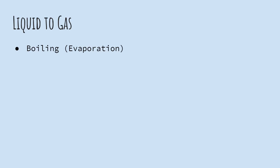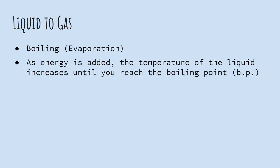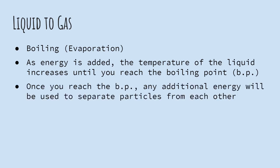Liquid to gas, that's called boiling or technically evaporation. As we add energy to a liquid, the temperature of liquid goes up until you reach the boiling point. That's the temperature where the things are going to start to boil. Once you reach the boiling point, any more energy that you add, instead of changing the temperature, it's used to separate the particles from each other, to separate them and get them to not touch anymore.